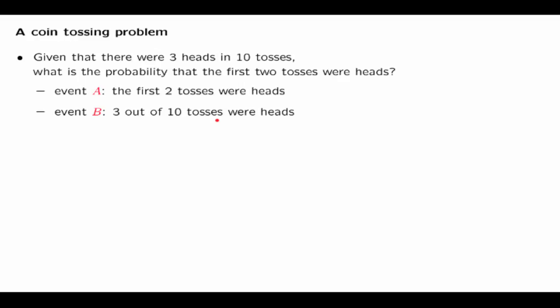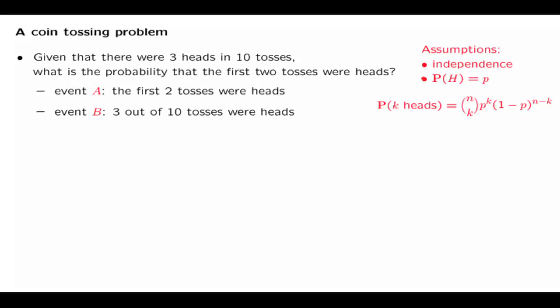We need to be explicit about our assumptions. We will assume that the different coin tosses are independent in the statistical sense. In addition, we will assume that each coin toss has a fixed probability p, the same for each toss, that a particular toss results in heads. These are the exact same assumptions that we made earlier when we derived the binomial probabilities. In particular, if we have n tosses, the probability that we obtain exactly k heads is given by this expression.